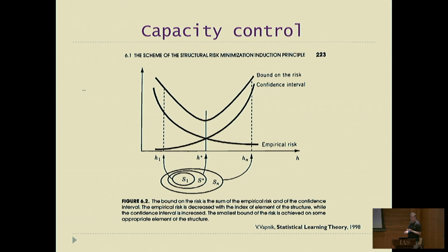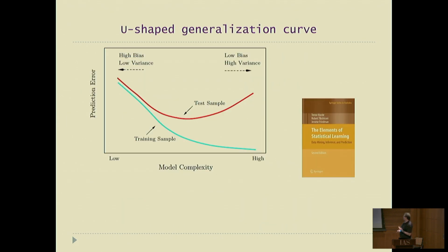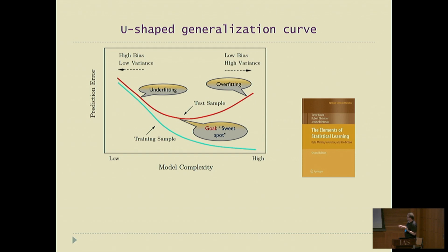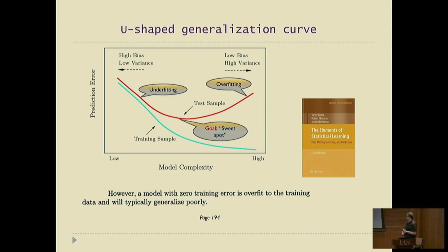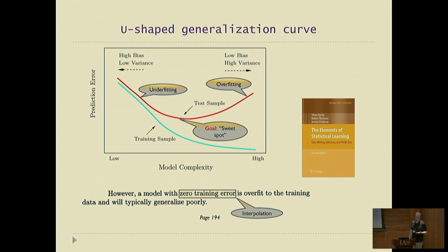The usual heuristic representation shows that as you increase model complexity, your training loss goes down, and your test loss goes down and then up again. The left part is underfitting, the right is overfitting, and the goal is to find the sweet spot at the bottom of the U-curve. An informal corollary is that a model with zero training error — which is what we call interpolation — is overfit and will generalize poorly.